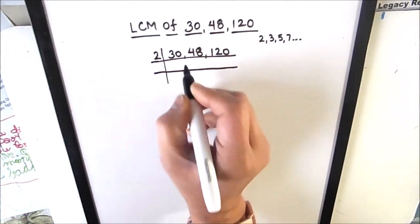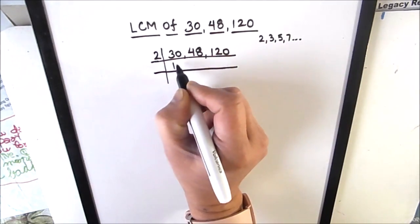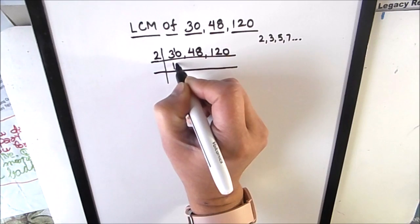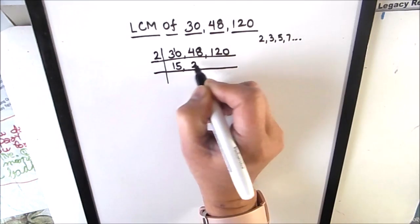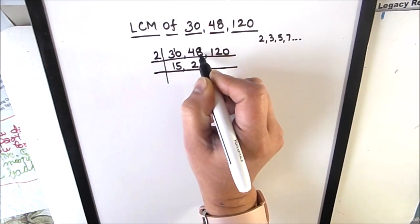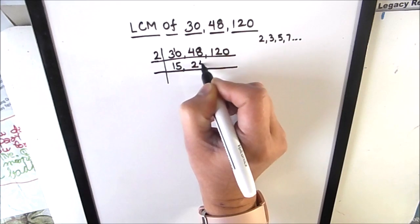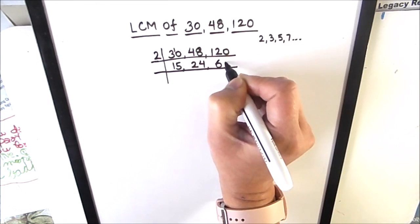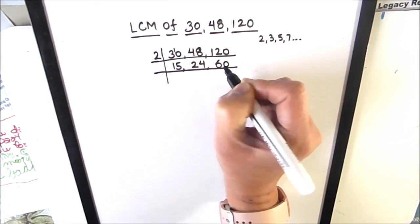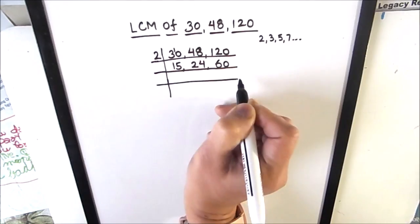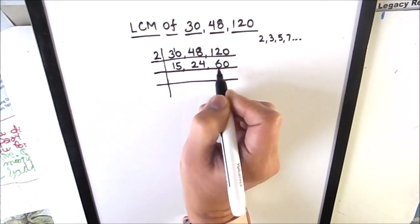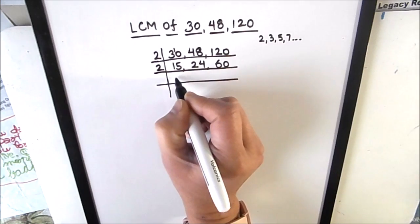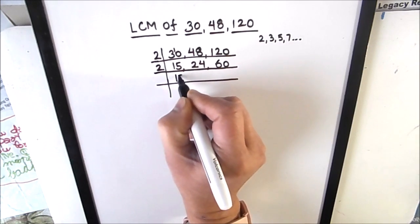Dividing 30 by 2: 2 times 15 is 30, so we get 15. Dividing 48 by 2: 2 times 24 is 48, so we get 24. Dividing 120 by 2: 2 times 60 is 120, so we get 60. Now we'll divide 24 and 60 by 2, and 15 is an odd number so it is not fully divisible — we'll write it as is.